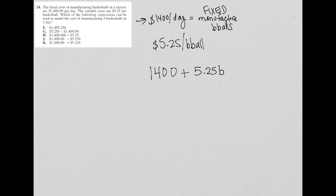So I multiply $5.25 times b, and that's it. This would be the cost. So where do I see that in my answer choices? It looks like it is choice K.